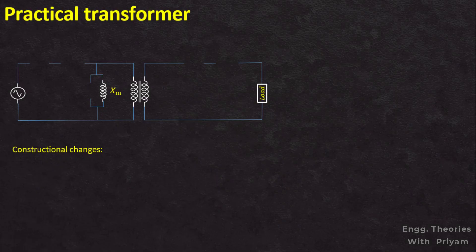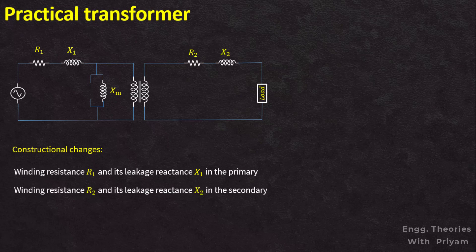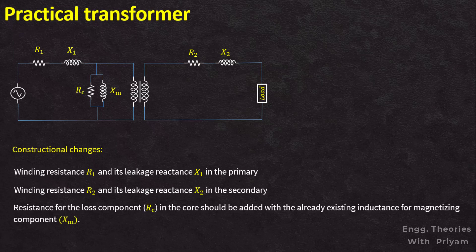There are some constructional changes that must be included. The first is that winding resistance R1 and leakage reactance X1 must be included in the primary winding, and winding resistance R2 and leakage reactance X2 must be included in the secondary winding. A loss component in the core, RC, must be added with the already existing magnetizing component XM.